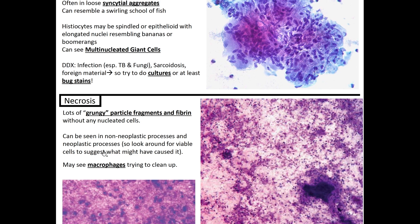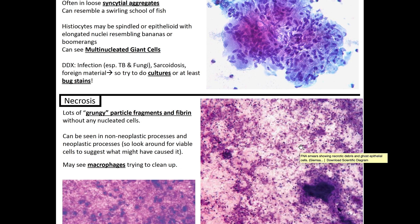Necrosis is another non-neoplastic finding — it shows lots of grungy particulate fragments and fibrin without any nucleated cells. It can be seen in both non-neoplastic and neoplastic processes, so look around for viable cells to suggest what might have caused it. You may also see macrophages trying to clean it up.